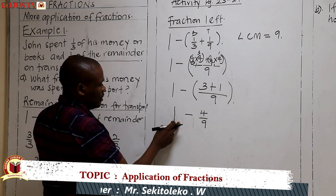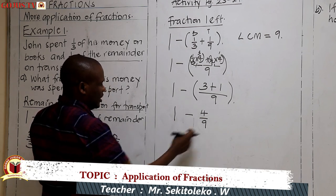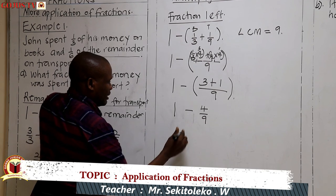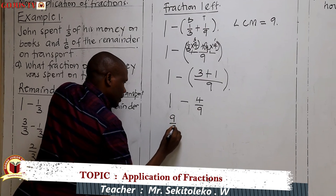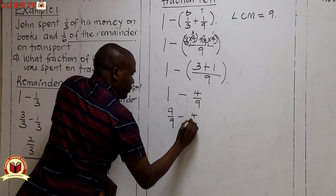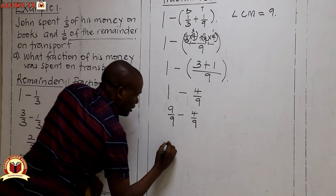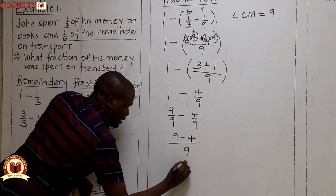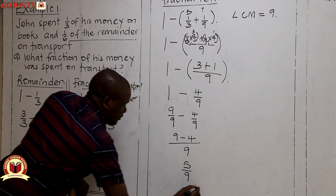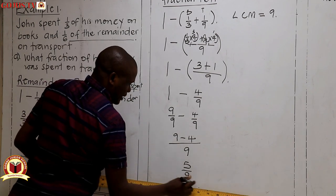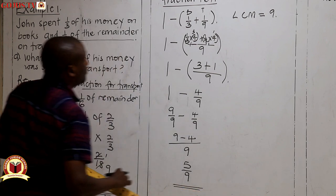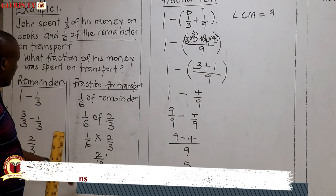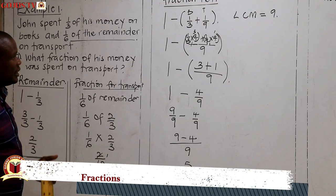Here we are subtracting. Taking the common denominator nine, one whole becomes nine-ninths. Nine-ninths minus four-ninths: the common denominator stays nine, and the numerators give nine minus four, which is five. That gives us five out of nine — that's the fraction that was left after spending one-third on books and one-ninth on transport.